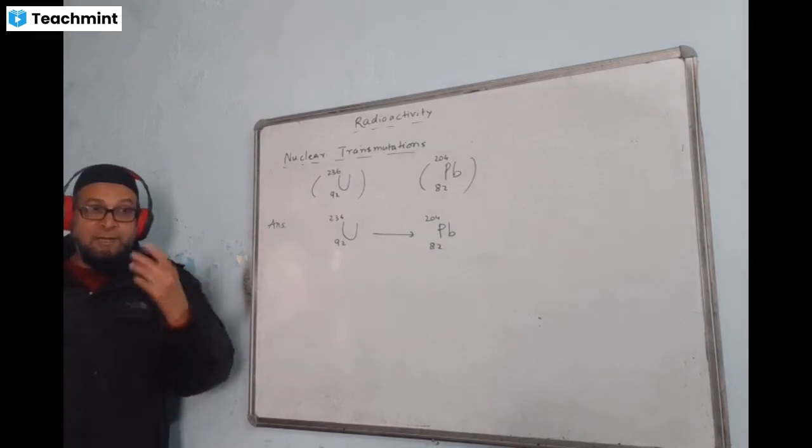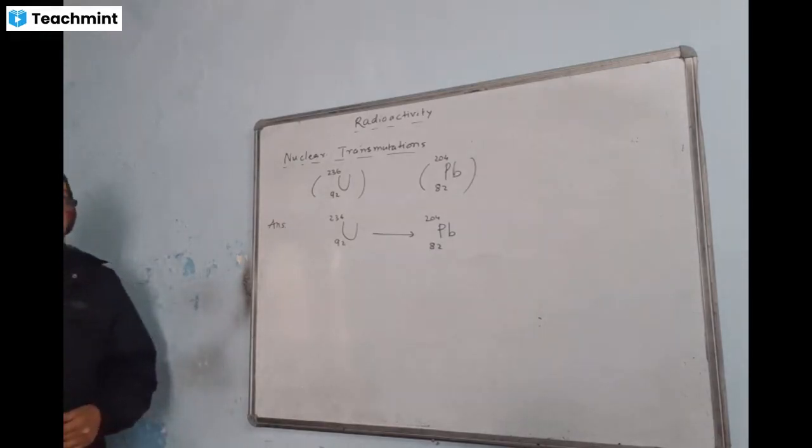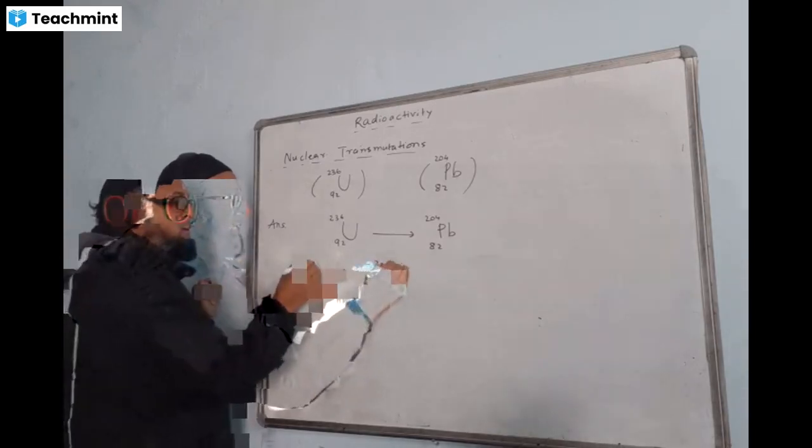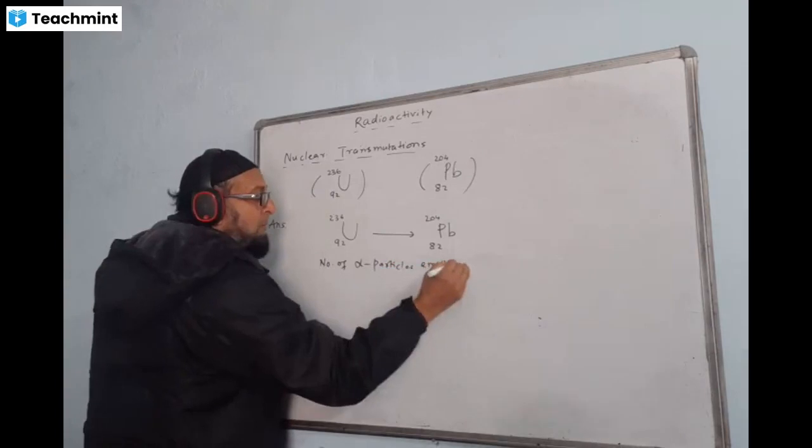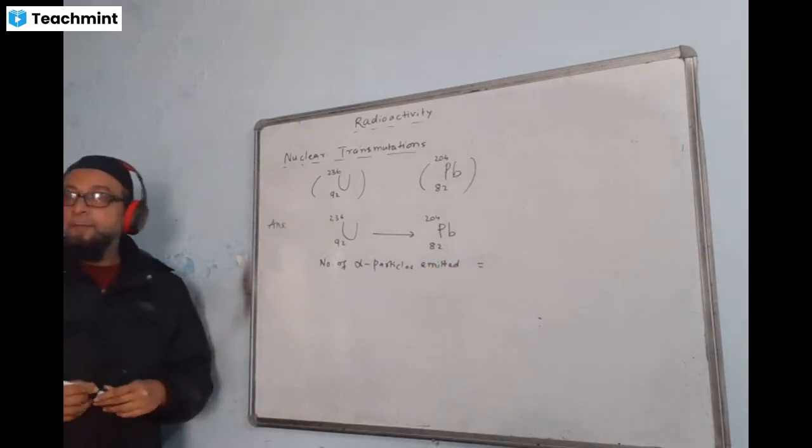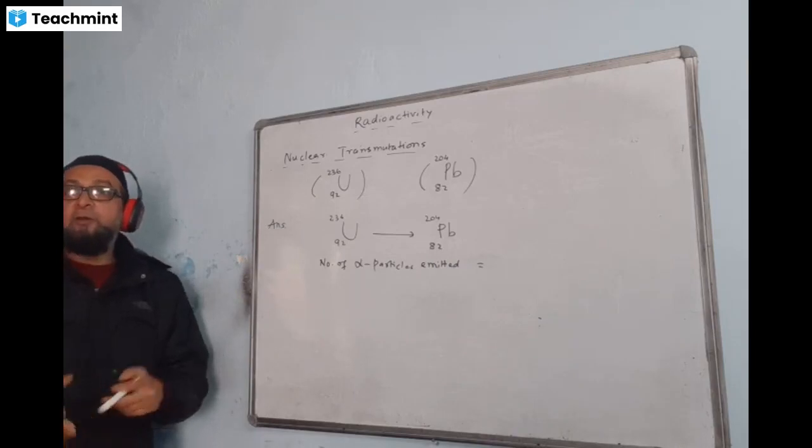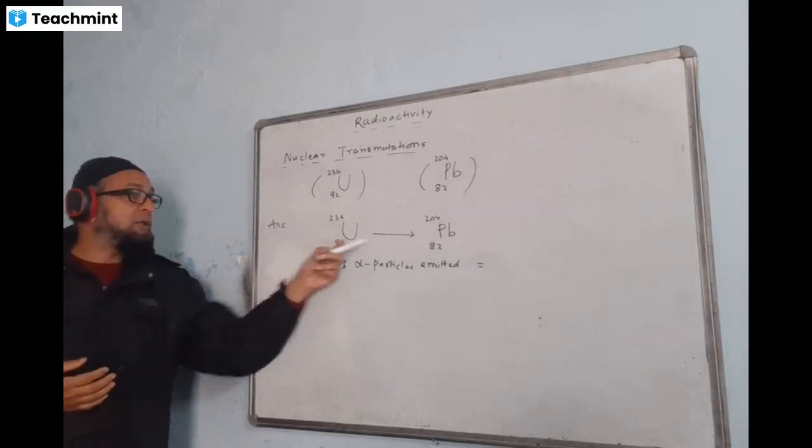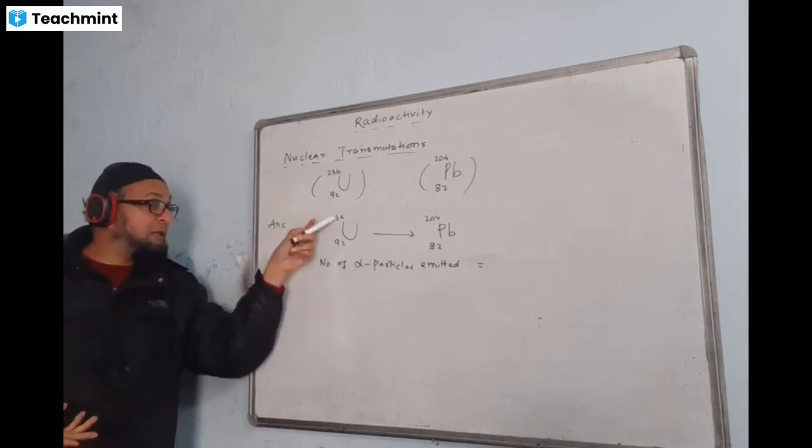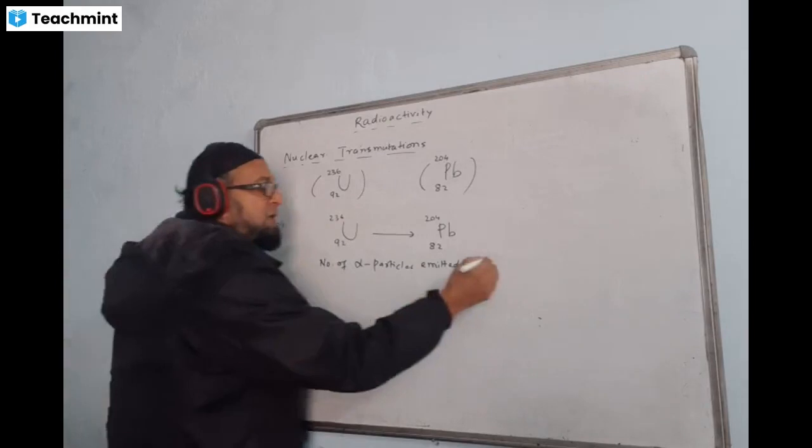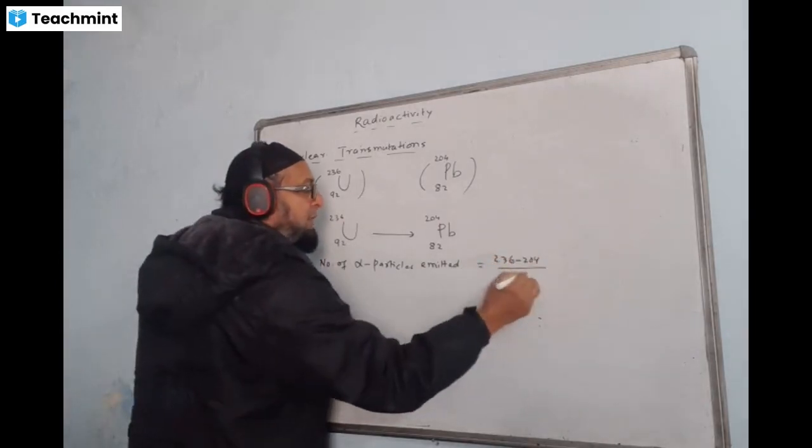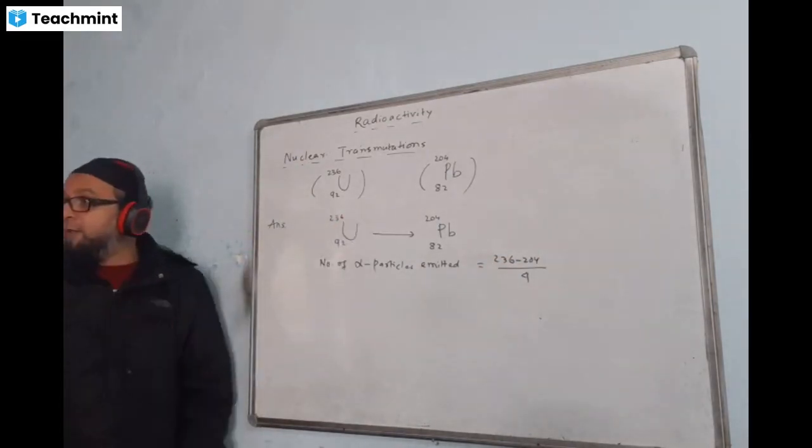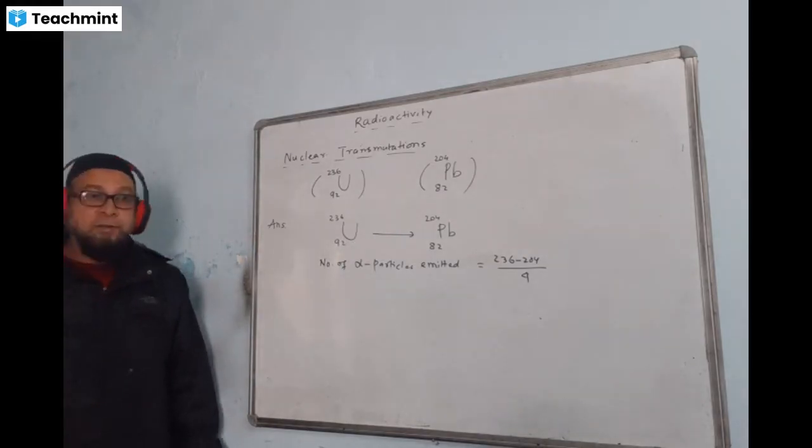First we will emit heavier particle, then the lighter. So alpha particle, how many alpha particles emitted? First we will calculate the number of alpha particles. Because alpha time both changes and beta time this changes. So this will change in alpha also in beta also. She has changed in this number. 236 minus 204 divided by 4, that will give the number of alpha particles.